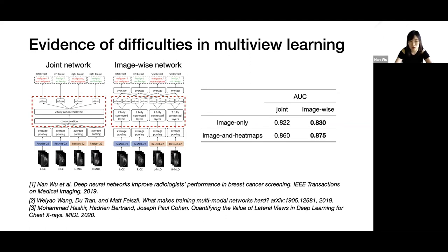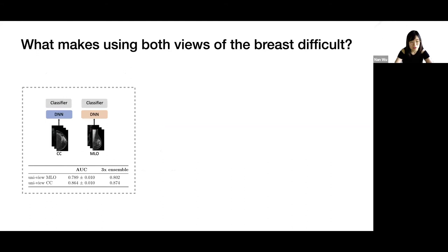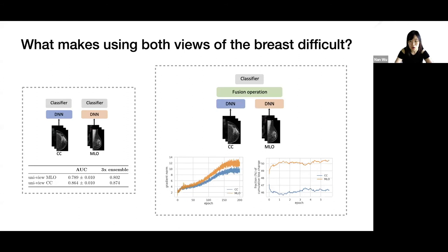This motivated our work presented in this paper. Firstly, we are interested in understanding what makes using both views of the breast difficult. We start from uniview models trained separately on CC and MLO views. We observed different learning speeds and different generalization performance of those uniview models. Ultimately, we found that the part of the model operating on the MLO view has a higher gradient norm over training and contributes more to the overall loss reduction. We hypothesize that this leads to a kind of overfitting where the model relies too strongly on one of the views.